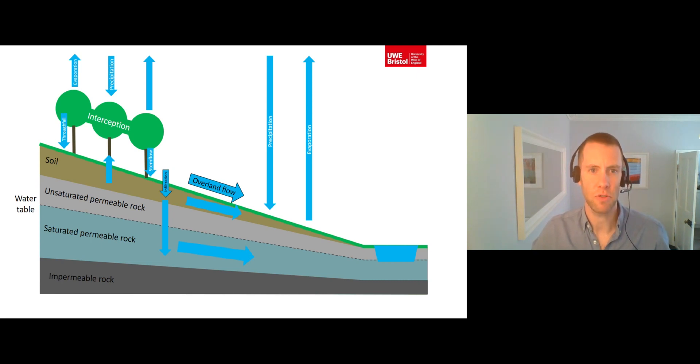If water is unable to infiltrate into the hill slope surface, then it will travel down the hill slope as overland flow, which is also known as surface runoff. Overland flow is a very quick route for water to move downhill slopes into river channels.